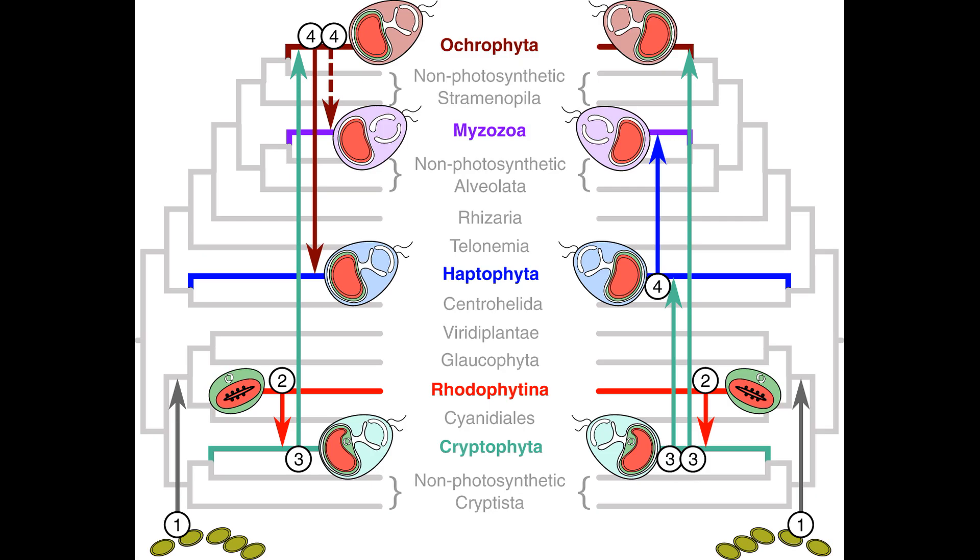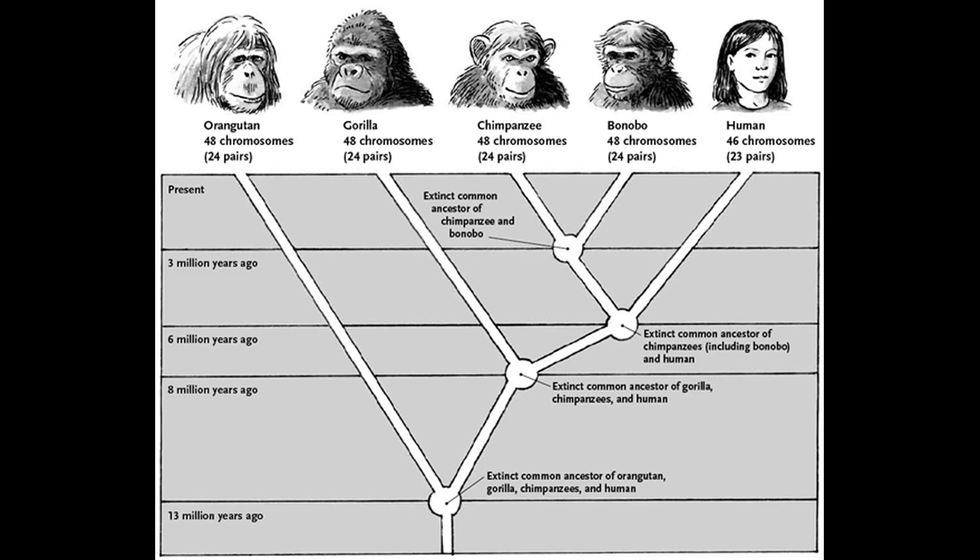So, that's the bonobo's tale. Incomplete lineage sorting is one way genes can indicate different phylogenies, but by taking the consensus of genes we can reach a more accurate relationship. So, thanks for watching, and I'll see you next time.